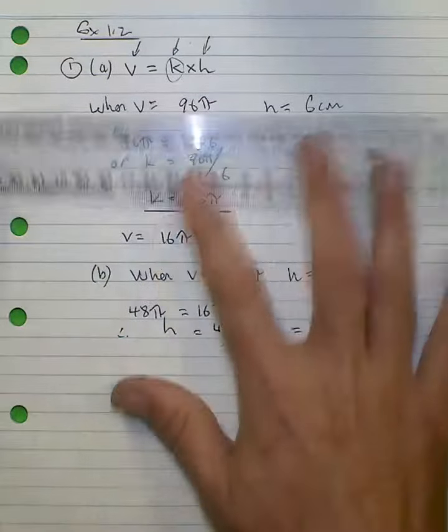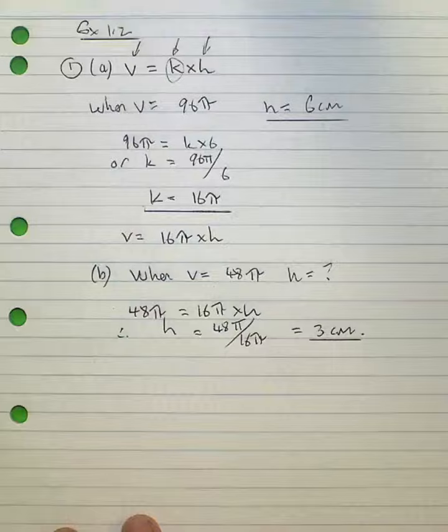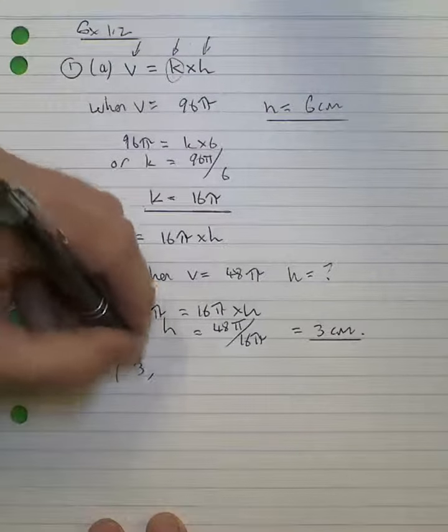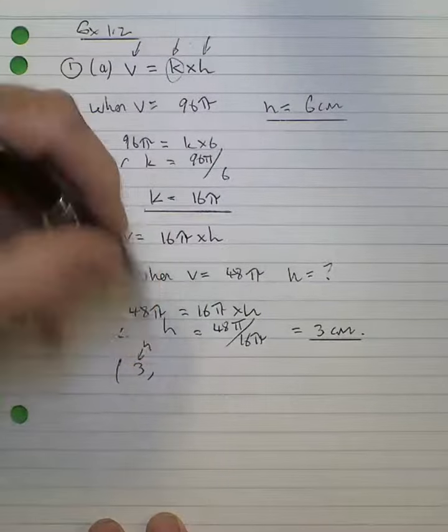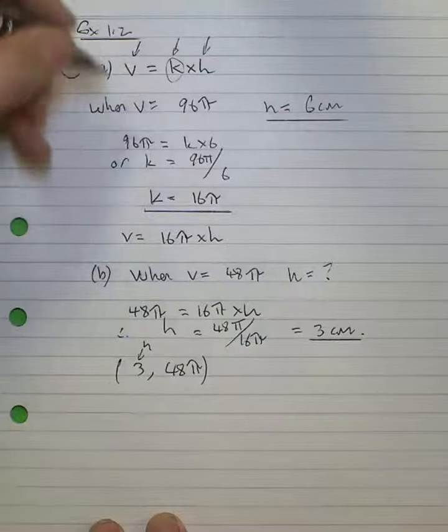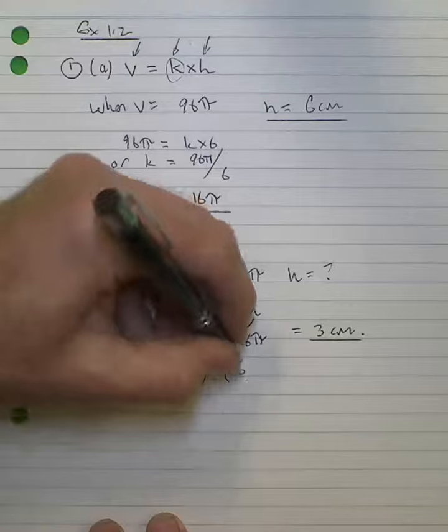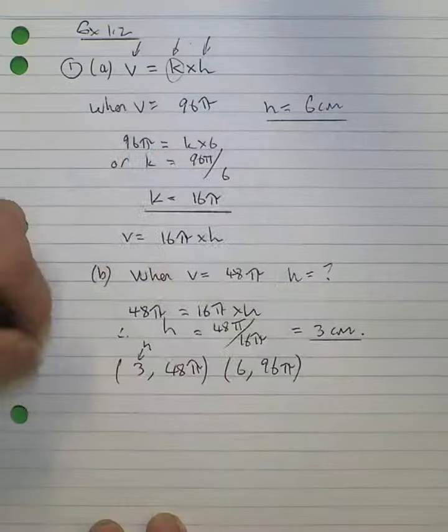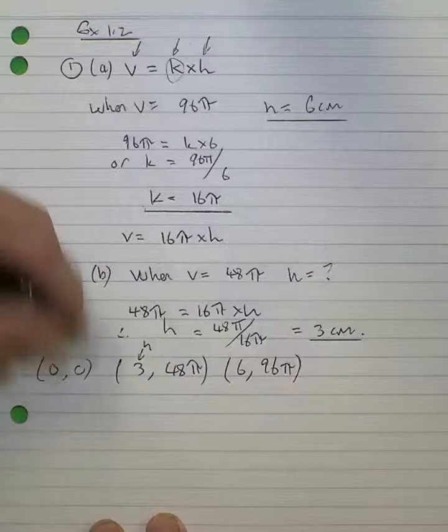we now have two, in fact three, figures that we can make use of. We've got the 3 for the height, 48π. We've got from the first part of the question, a, we've got 6 is 96π. And we of course have, when there's no height, there's no volume.